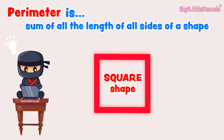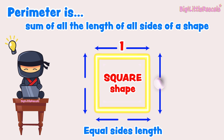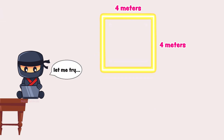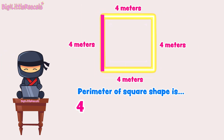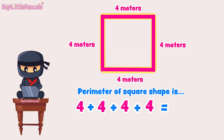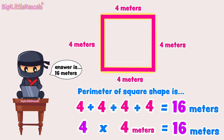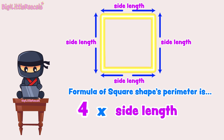Let's first investigate this square shape. This square shape has four equal-length sides: 1, 2, 3, and 4. In this square, each side length is 4 meters long. So what is the square's perimeter? 4 plus 4 plus 4 plus 4 equals 16 meters. Or if we use multiplication, 4 sides of 4 meters equals 4 multiplied by 4 meters, which equals 16 meters. So the formula for square perimeter is 4 times side length. Great work, Ninja!